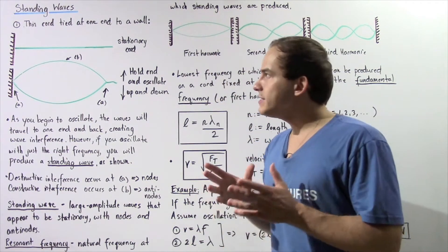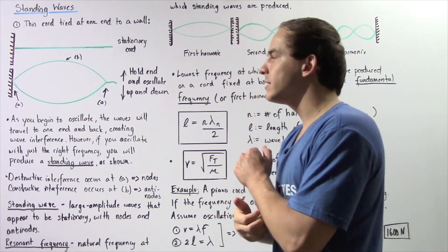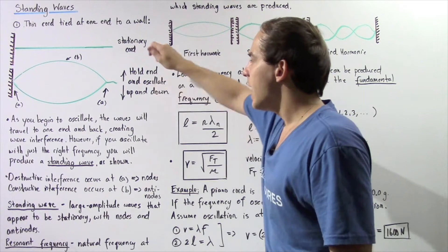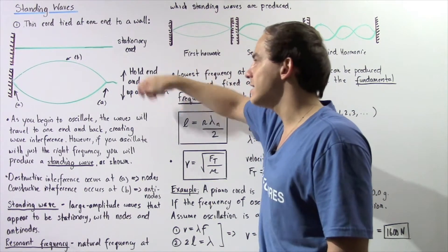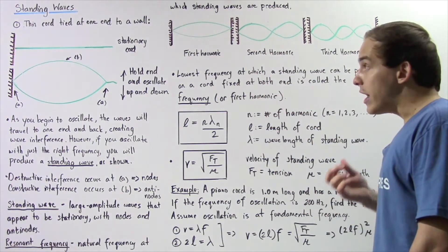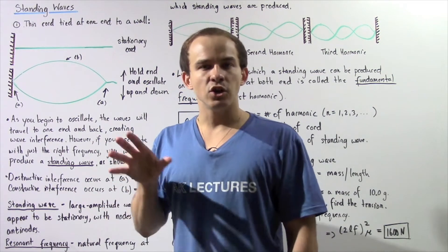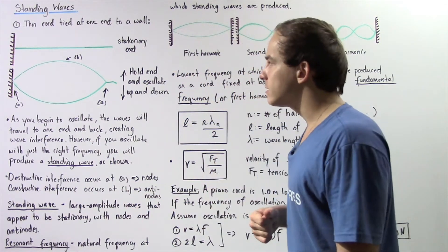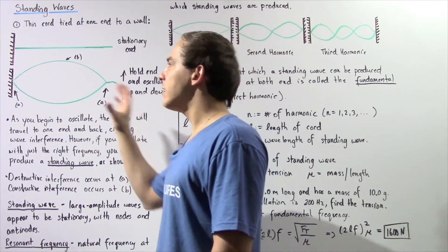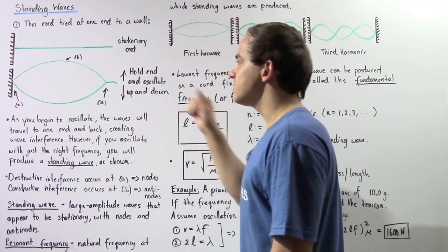Let's suppose we take a thin cord shown in green. We tie that thin cord at one end to the wall and take the other end and begin oscillating it up and down. When we create those oscillations, we create mechanical waves that propagate towards the other end of the cord, bounce back, reflect inverted, and travel back to this end.